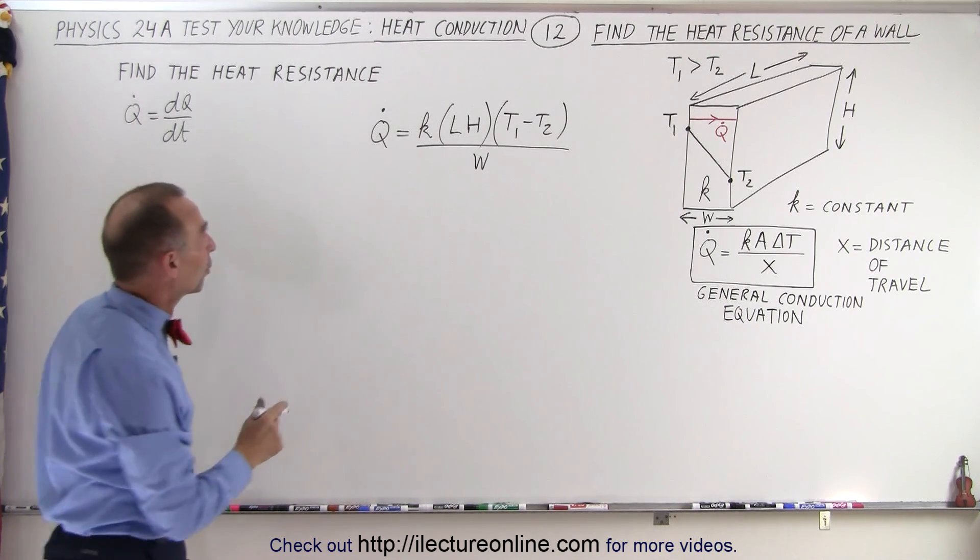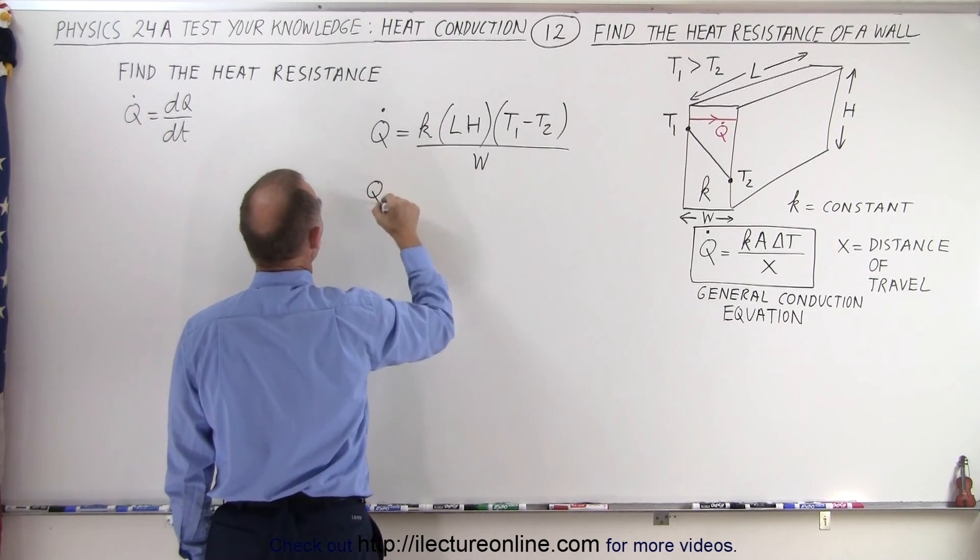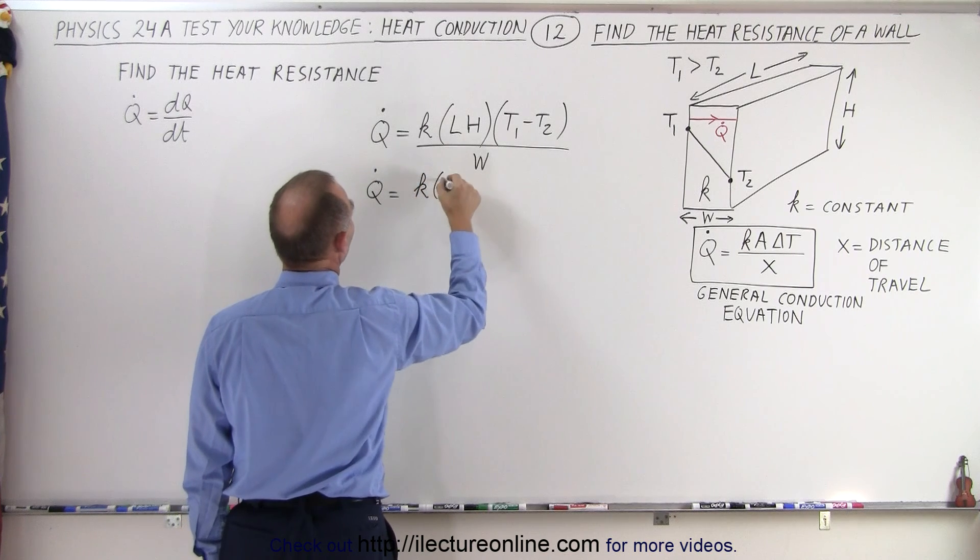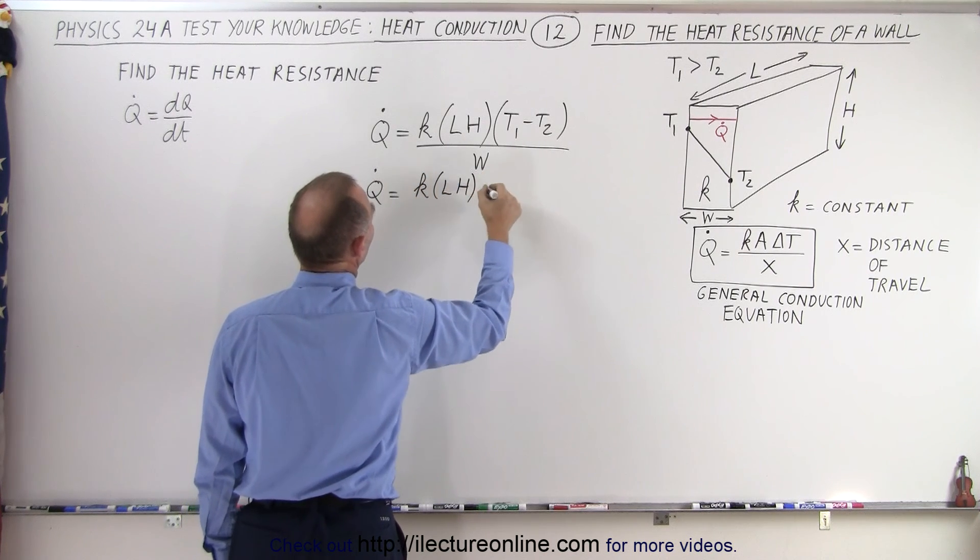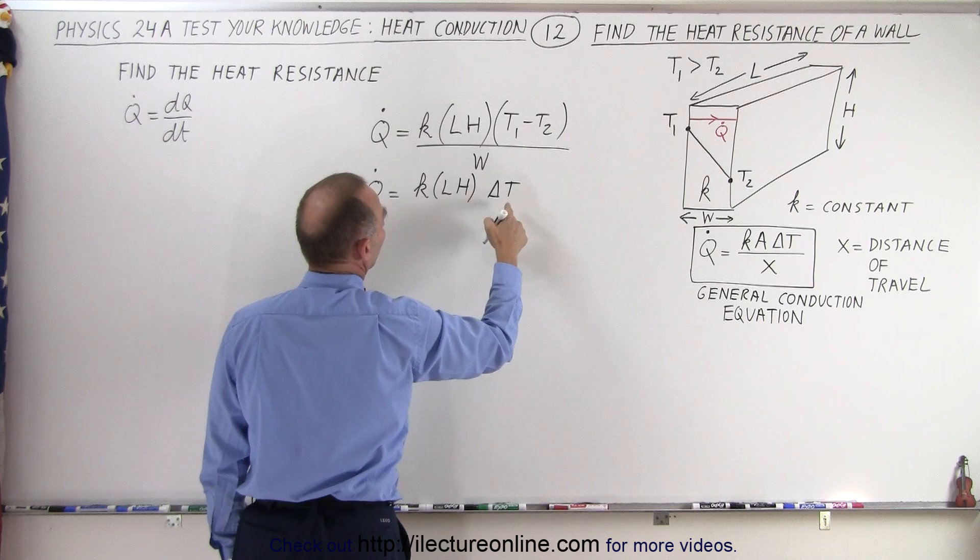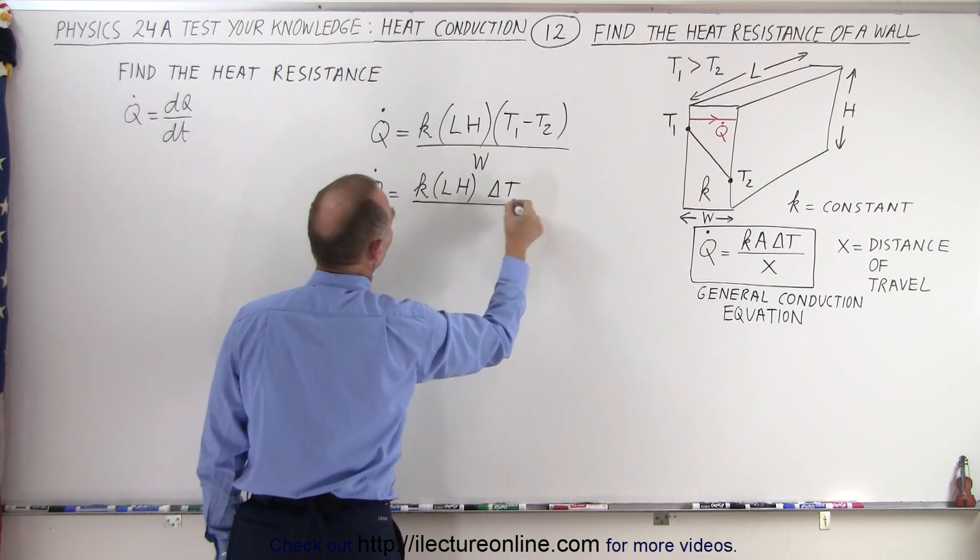So now we're going to rewrite that equation. We're going to write this as Q dot equals K times length times height times the difference in the temperature between the left side and the right side divided by the width.